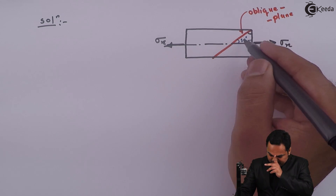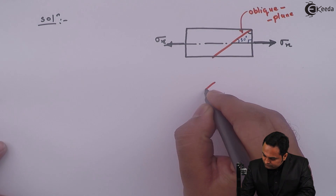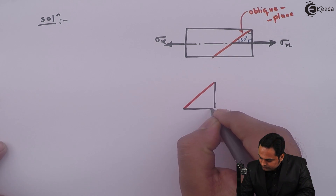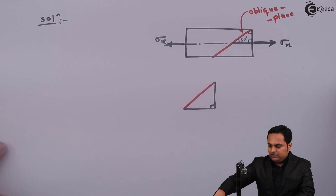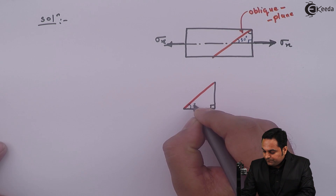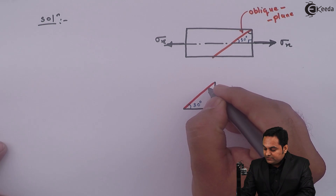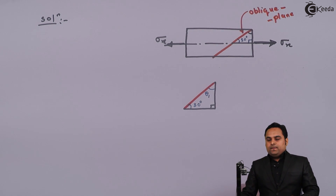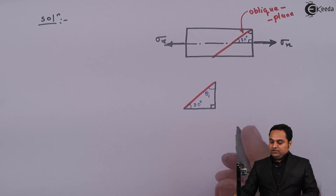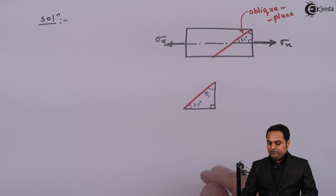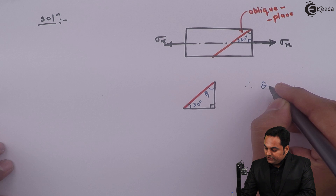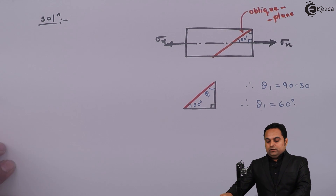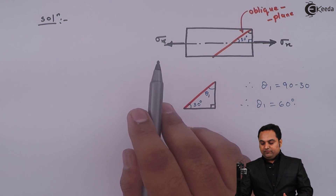The first thing is to know the angle made with respect to the vertical, so I'll separate the triangle. In the problem, the angle is given of the oblique plane with respect to the horizontal — that is 30 degrees. However, while deriving the formula for all kinds of stresses, the angle was taken of the oblique plane with respect to the vertical, called theta₁. Therefore, theta₁ = 90 − 30 = 60 degrees.